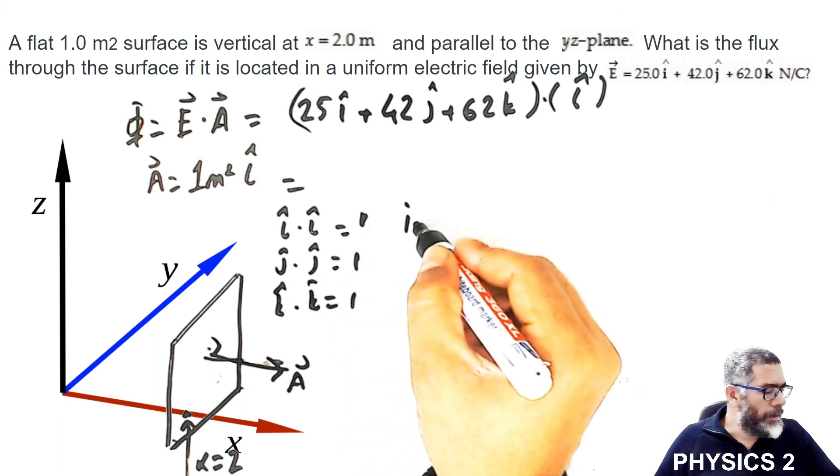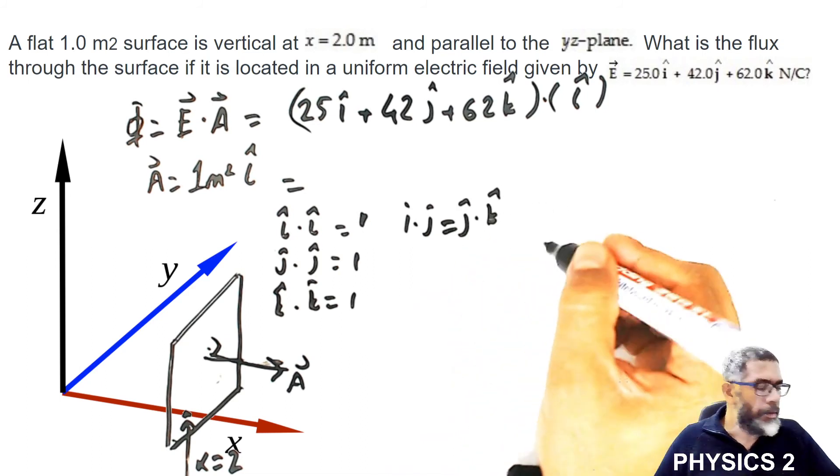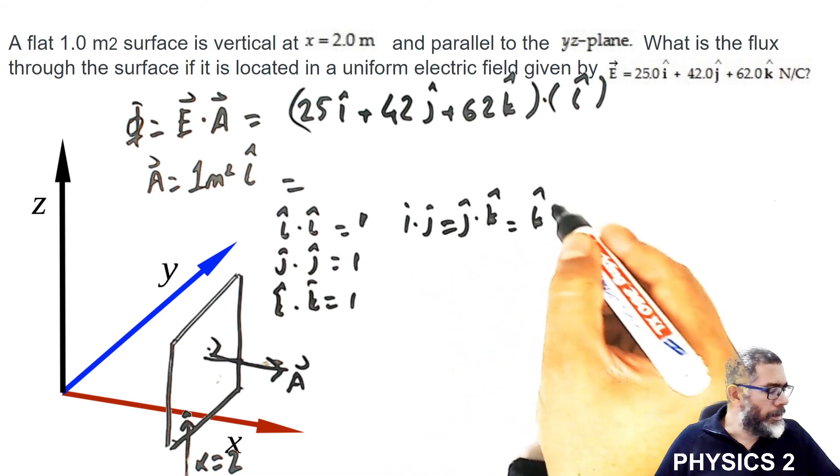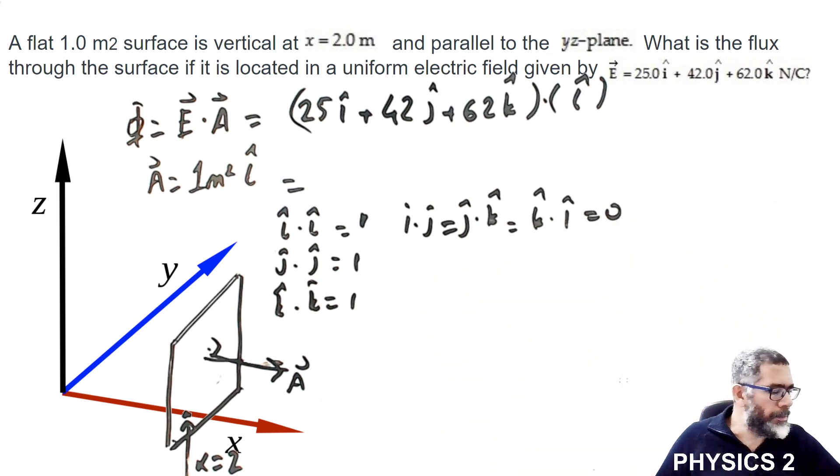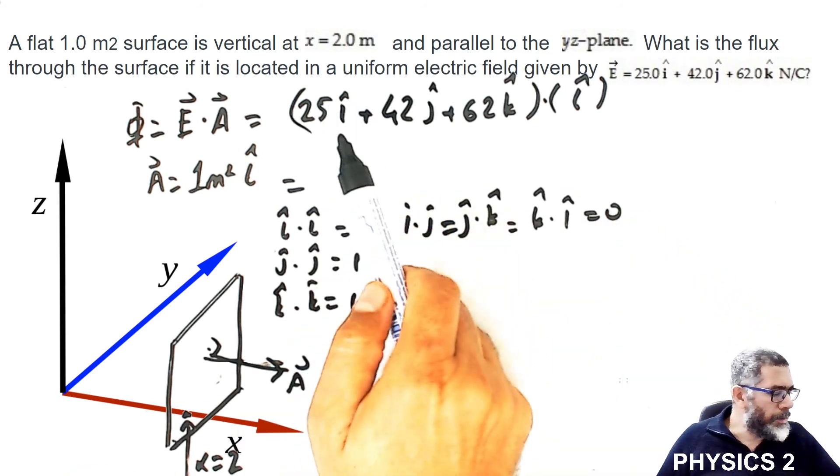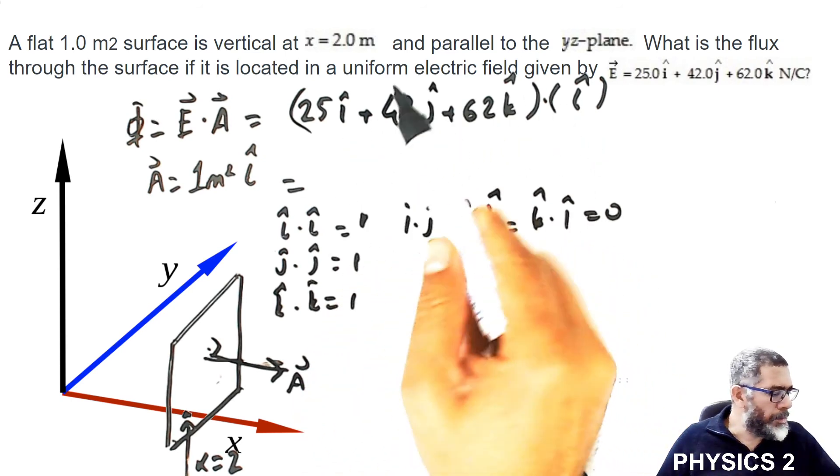We know that i dot i, j dot j, and k dot k are all equal to one. But i dot j, j dot k, or k dot i are all zero because they are perpendicular to each other. This is the definition of the dot product. So this turns out to be i dot i, making j and k components zero.